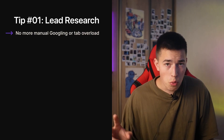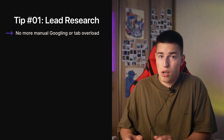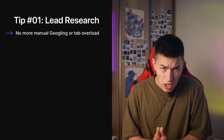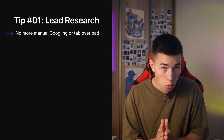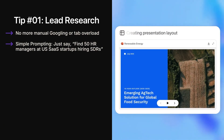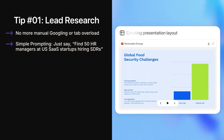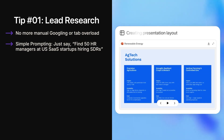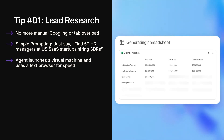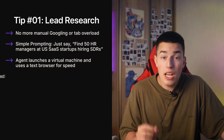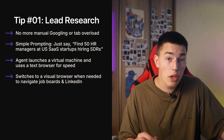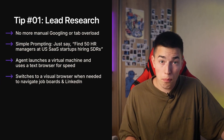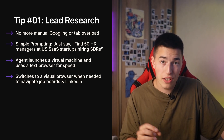Here's how you can use it to automate your cold outreach. First, lead research — you know the part where you Google stuff for two hours, open 47 tabs, and copy-paste company names into a spreadsheet? Agent does that for you. You just tell it, 'Find me 50 HR managers at US-based SaaS startups hiring SDRs,' and it starts hunting. It opens virtual machines, launches a text browser to read web pages lightning fast, and if needed, switches to a visual browser to click through LinkedIn profiles or job boards. It's like an SDR on Adderall.